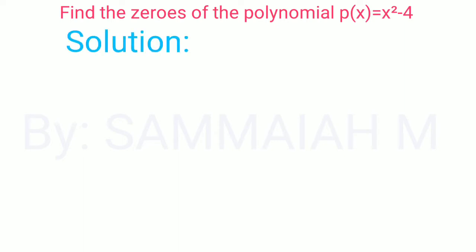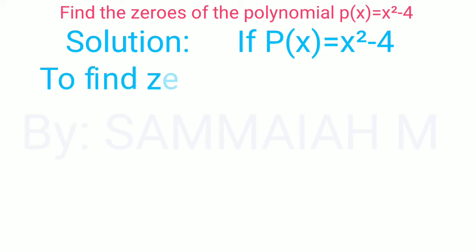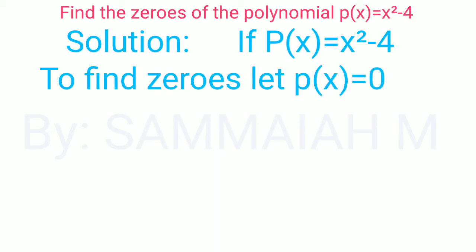Find the zeros of the polynomial P of x is equal to x square minus 4. Solution: if P of x is equal to x square minus 4, to find zeros, let P of x is equal to 0.